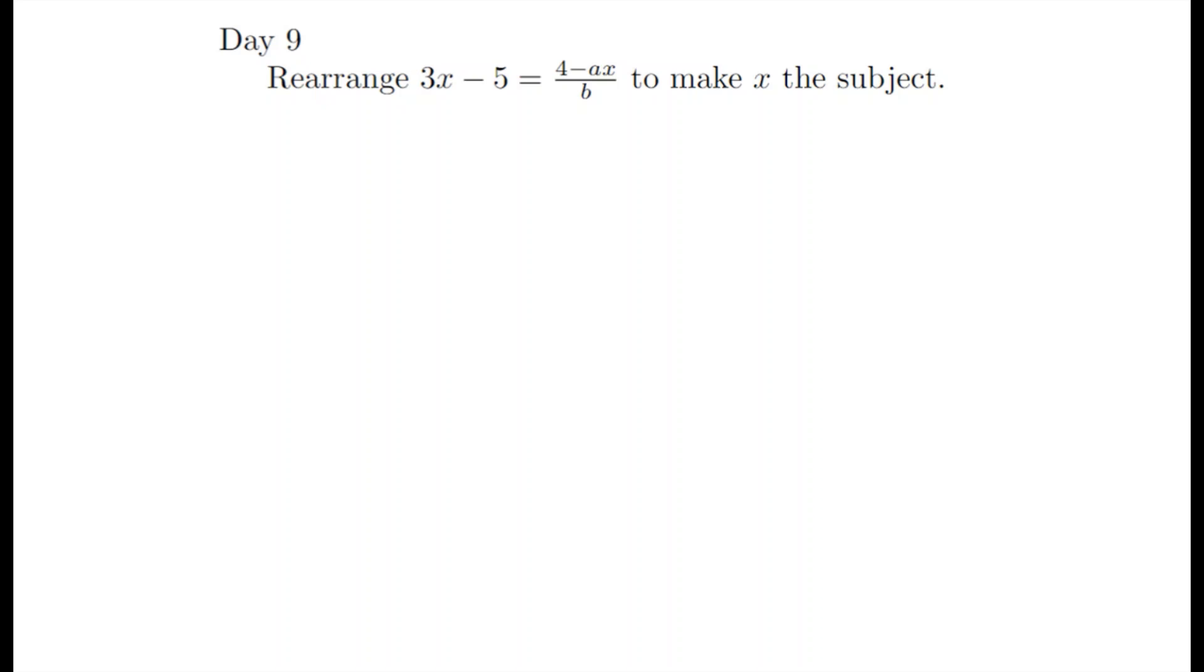With a question like this we want our end game to be x equaling something else. Now if we notice we've actually got x's on both sides, so we are going to have to rearrange this to get all the x's on one side to then be able to manipulate it better.